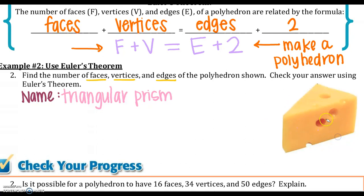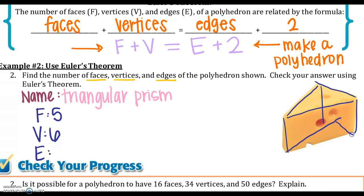How many faces do I have? And this is where it kind of gets tricky. I have one on the top, one on the bottom, and then I have three on the sides. So three, four, five faces. Two of those being bases, vertices. I have three on the top, and three on the bottom, so that would be six, and edges. I have three on the top, three on the side, and three on the bottom. So three, six, nine.